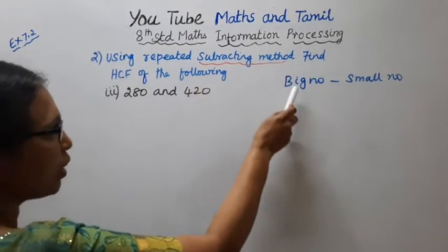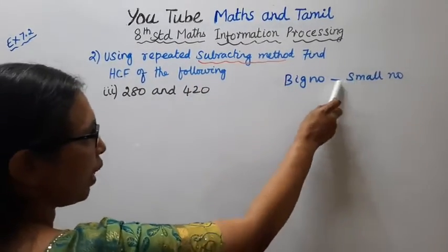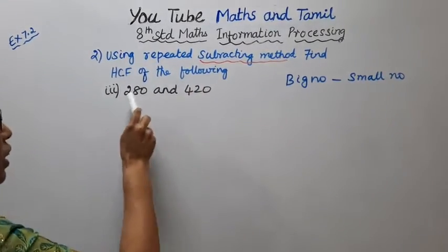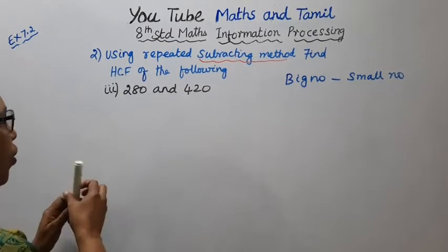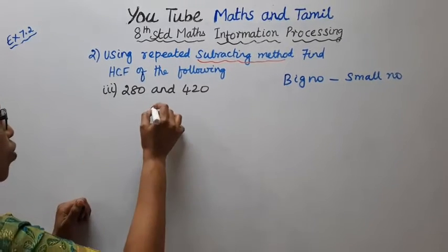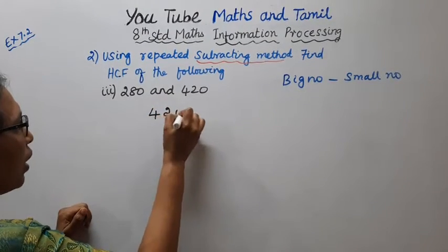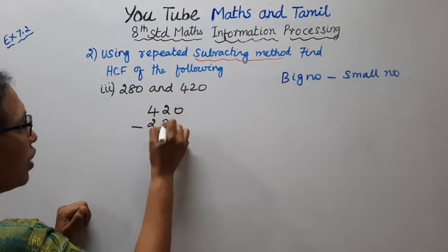The subtracting method is: big number minus small number. The first numbers are 420 and 280. So 420 minus 280.